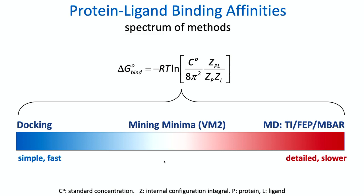There are a spectrum of methods for calculating protein-ligand binding affinities. Here on the left, we have docking, which is relatively simple. It's very fast, so you can push through tens of thousands or more ligands. It can give you useful information on binding pose, but it's not very good at ranking ligands according to their affinities. On the right-hand side, we have the MD-based methods, of which FEP is an example. These are very rigorous — in fact, exact for a given potential if they're fully converged.